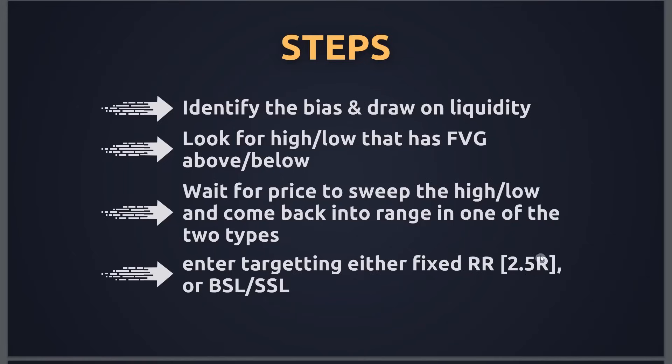Based on my back testing, 2.5R is very achievable. A lot of times price goes much higher — sometimes 5, 6, 7R and sometimes even 10R. It's your choice: you can favor a fixed reward-to-risk based on your back testing, or be flexible with the liquidity levels as your target.